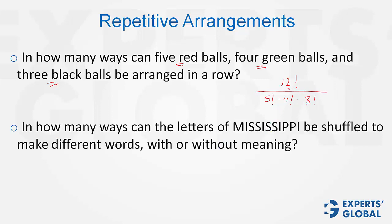One more question on this concept. 11 letters — they can be shuffled in 11 factorial ways. But out of these 11, there are 4 S's which are the same, and there are 4 I's which are the same, so 4 factorial into 4 factorial. And then there are 2 P's which are the same. The answer is 11 factorial divided by 4 factorial, 4 factorial, 2 factorial.